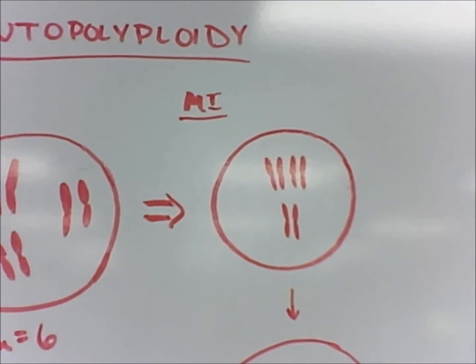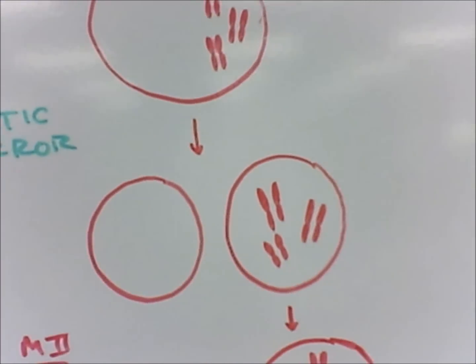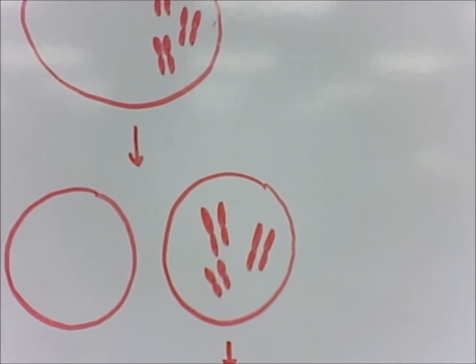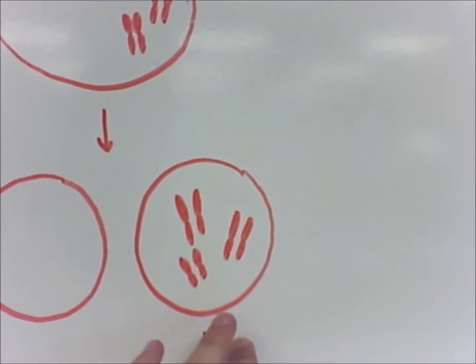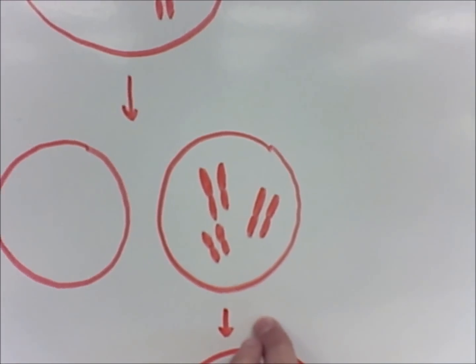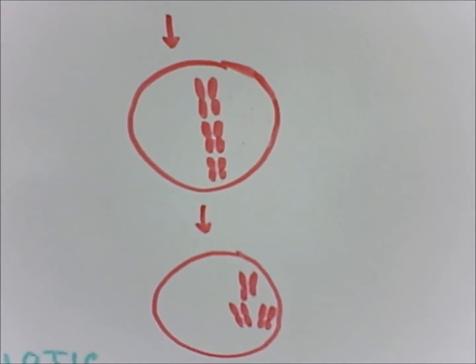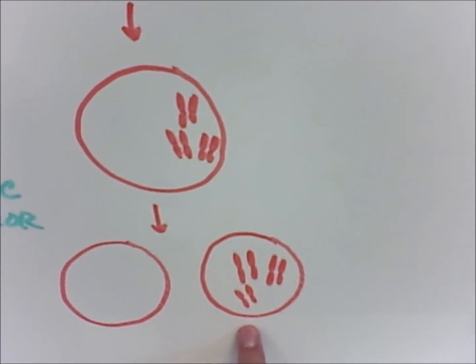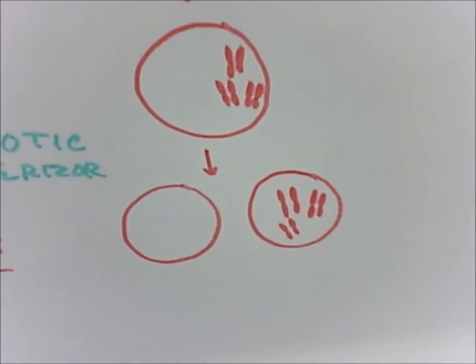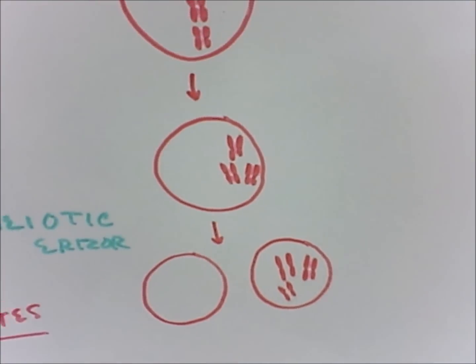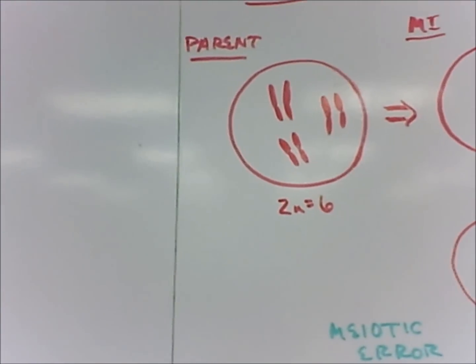The cell undergoes meiosis 1 and doesn't separate its chromosomes, so only one gamete gets all of the chromosomes. It undergoes meiosis 2 and the same thing happens, which means that this gamete has the same number of chromosomes as the parent.